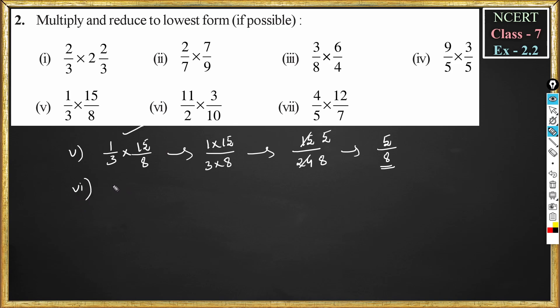Now problem number 6: 11 by 2 multiplied by 3 by 10. This is 11 into 3 by 2 into 10. 11 into 3 is 33, divided by 2 into 10 is 20. This is already in simplest form because the common factor is only 1. So 33 by 20 is the answer.